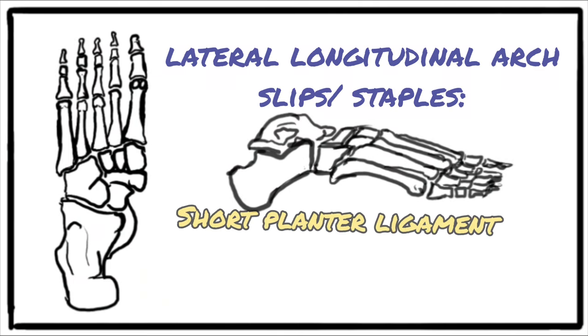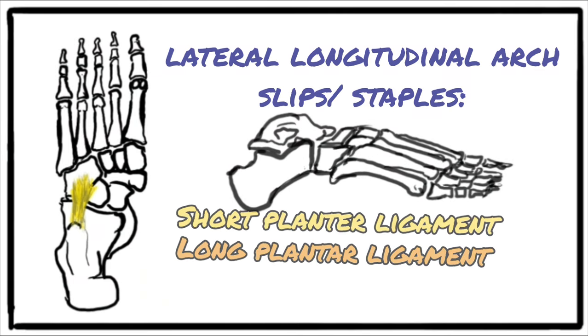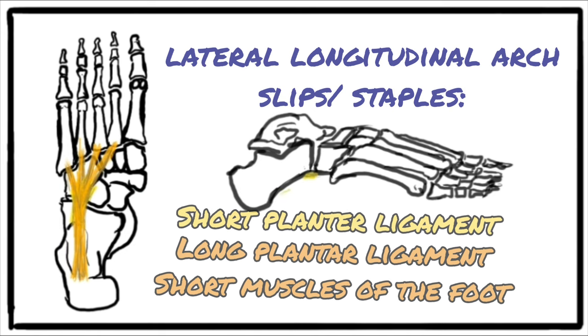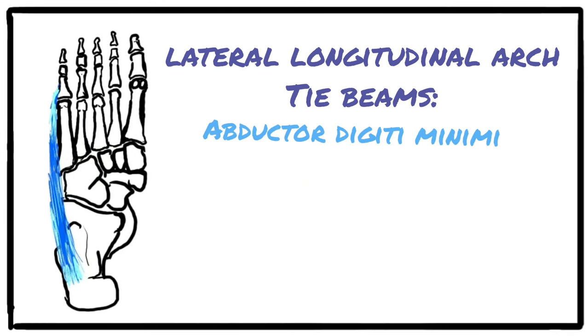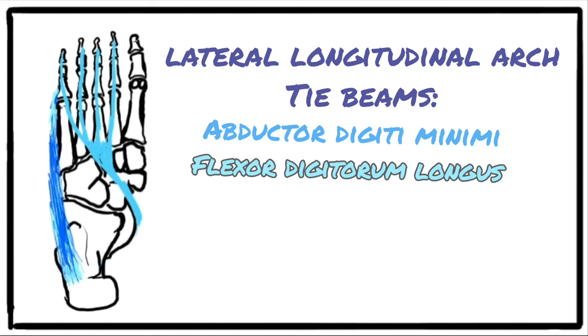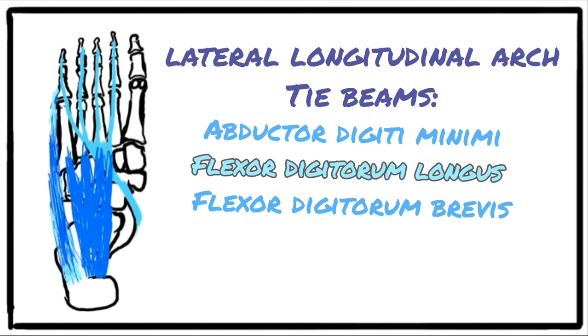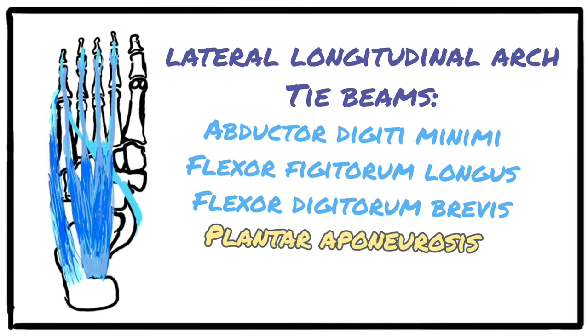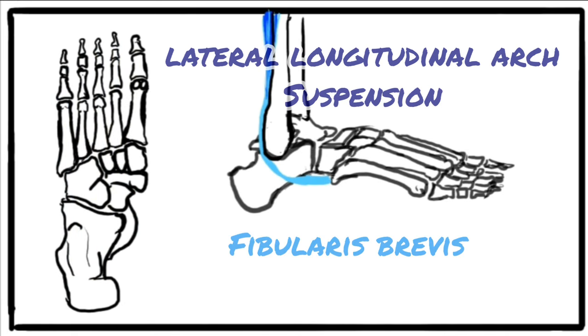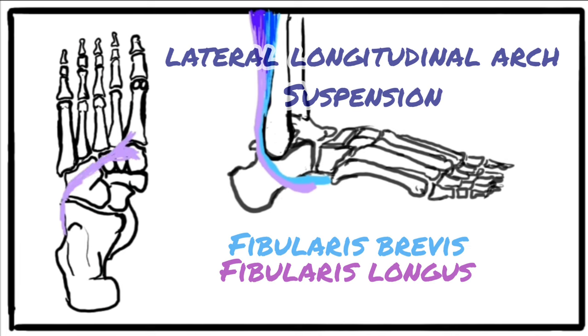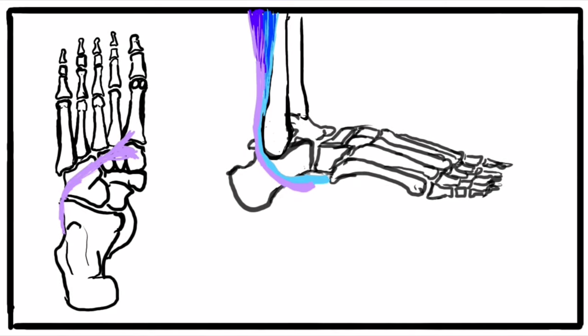The slips are formed by the short and long plantar ligaments and the short muscles of the foot. The tie beams are the abductor digiti minimi, flexor digitorum longus, flexor digitorum brevis, and the plantar aponeurosis. Suspension is by fibularis brevis and fibularis longus. Ligaments are the main stabilizing factor for the lateral longitudinal arch.